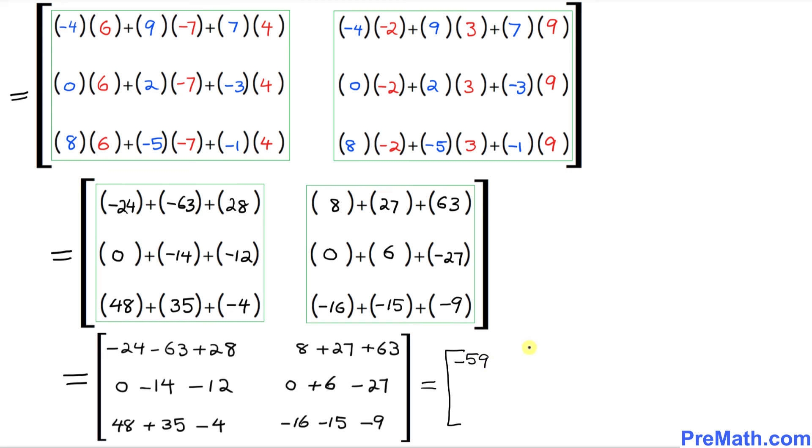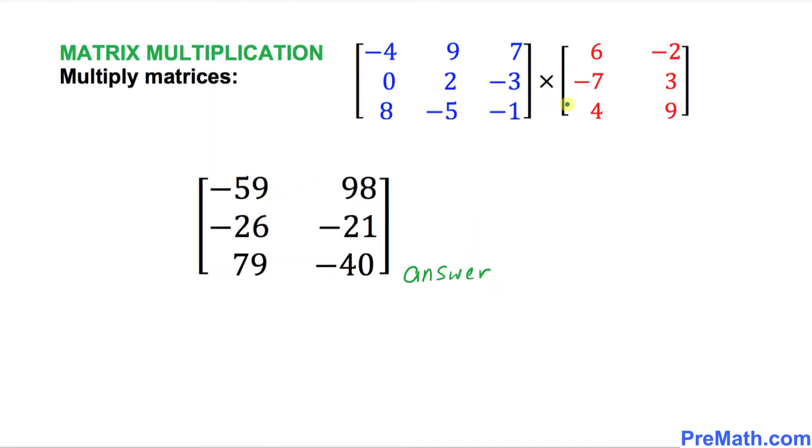The next number is going to be 98, right up here. And over here, this number is going to be negative 26. Here is going to be negative 21. Here is going to be 79. We have to be very careful. And this is negative 40. And thus, when we multiply these two matrices, that is our final answer.